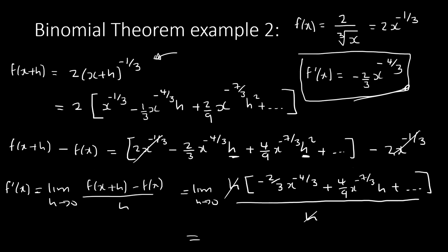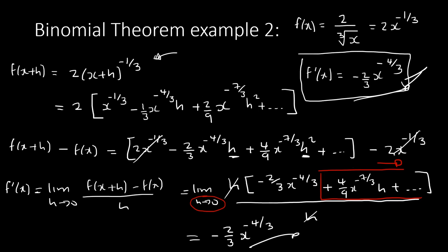Every term from the second one onwards has h, h², h³ and so on, so when we substitute h = 0 they all become zero. Our final answer is −(2/3)x^(−4/3), which is exactly the answer we knew from the beginning.